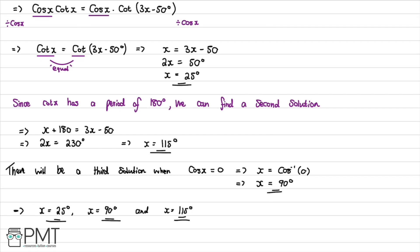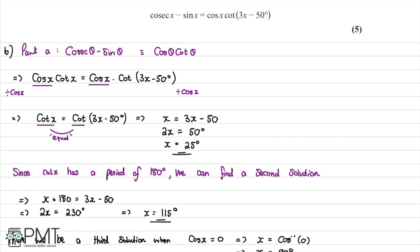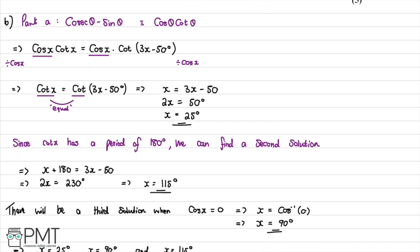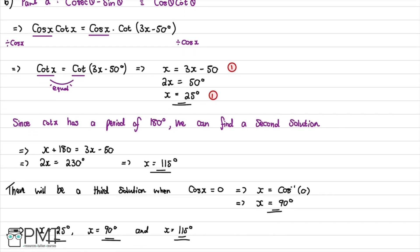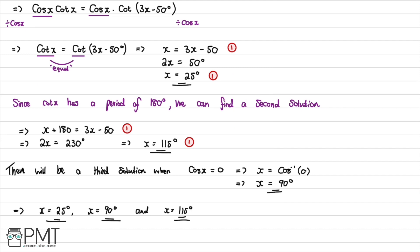This part of the question was worth five marks. We receive our first mark for reaching x equals 3x minus 50, our second mark for finding x equals 25 degrees, our third mark for identifying that the period of cot x gives another solution, our fourth mark for finding x equals 115 degrees, and our fifth mark for recognising the cos x equals zero case and obtaining x equals 90 degrees.